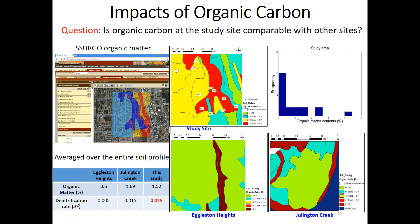We believe denitrification is important. We don't have isotope data as we did for the Alligator Heights area, so we cannot draw a direct conclusion. Instead, we compared organic carbon content. We know from isotope data that denitrification occurs at Alligator Heights and Arlington Creek. Our logic is: if organic matter is similar between the Indian River County site and those two sites, denitrification is also occurring here.